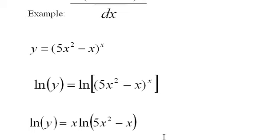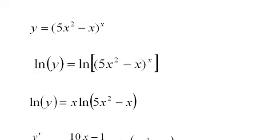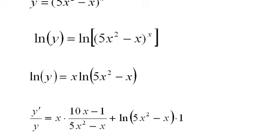Now we take the derivative implicitly, and the log of y is y prime over y. And we use the product rule here, x times the derivative of this, x times the derivative of that, plus the log of the polynomial times the derivative of x, which is merely 1.